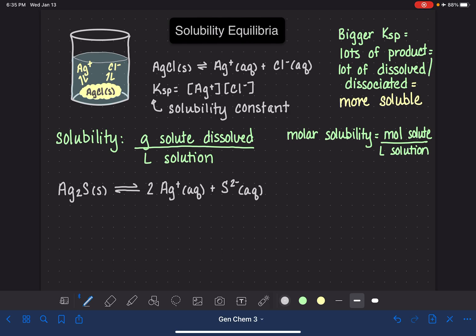And let's write the equilibrium expression for this. KSP equals the products, Ag+. Don't forget, raise it to its stoichiometric coefficient. And our other product, S2-.